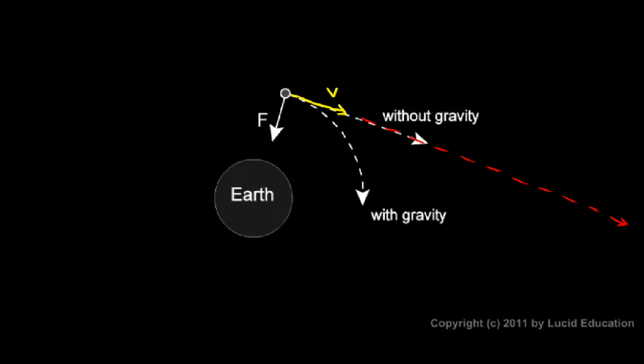So we can say that gravity is the force that holds an object in orbit. So if you want to know why it doesn't drift away, it's because of gravity. Gravity is the force that holds it in orbit.